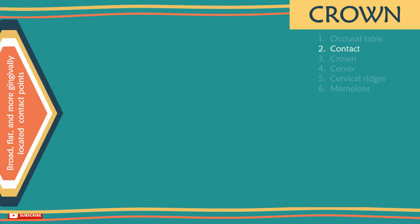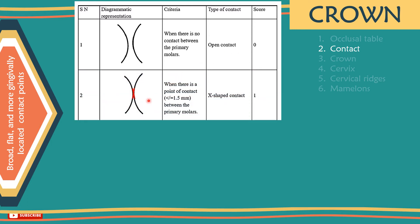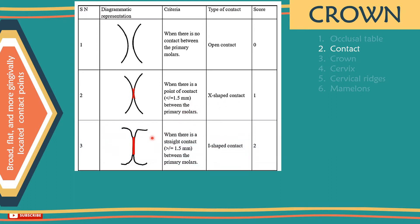Here are some types of different tooth contacts between primary molars. Number 1 – When there is no contact between the primary molars, it is called open contact. Number 2 – When there is a point of contact less than or equal to 1.5 mm, it is called X-shaped contact. Number 3 – When there is a straight contact larger than or equal to 1.5 mm, it is called S-shaped contact.